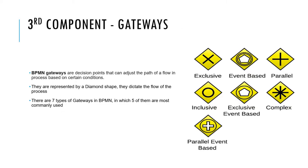The third component of BPMN is called gateways. BPMN gateways are decision points that can adjust the path of a flow in the process based on certain conditions. They are represented by a diamond shape and dictate the flow of the process. There are seven types of gateways in BPMN, of which five are most commonly used. Let us see those five gateways in detail.